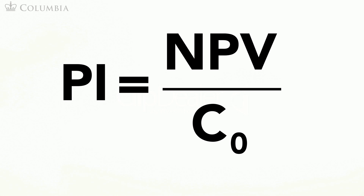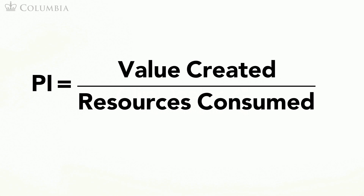The third rule we will learn is the profitability index rule. The profitability index is defined as the NPV of a project divided by its initial investment. It gives you the bang for your buck. For example, a profitability index of 0.2 means that the project creates 0.2 dollars of value today for each dollar invested.